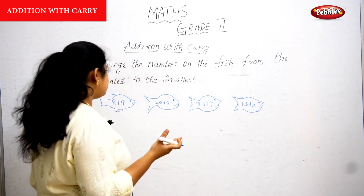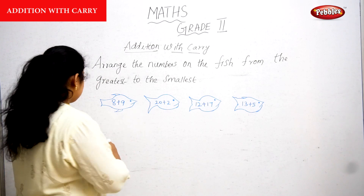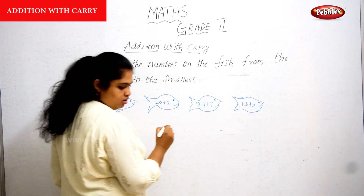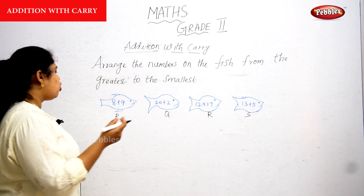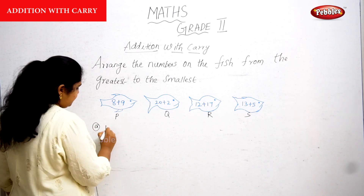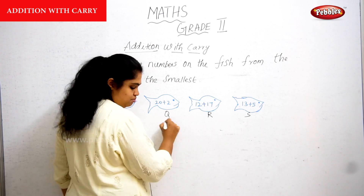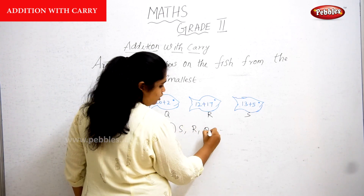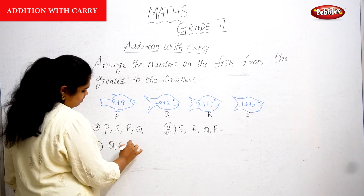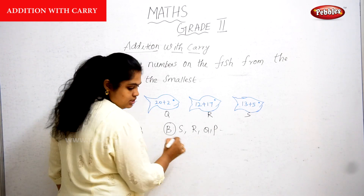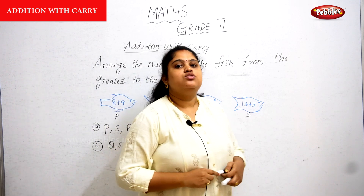There are four fish with an addition each, and they have given a name for each fish. The first fish is P, then Q, R, and S. The options are: A — P, S, R, Q; B — S, R, Q, P; C — Q, S, R, P; and D — R, Q, S, P.